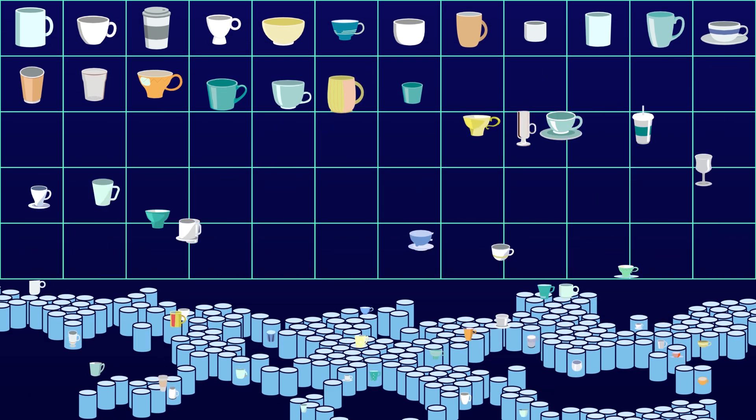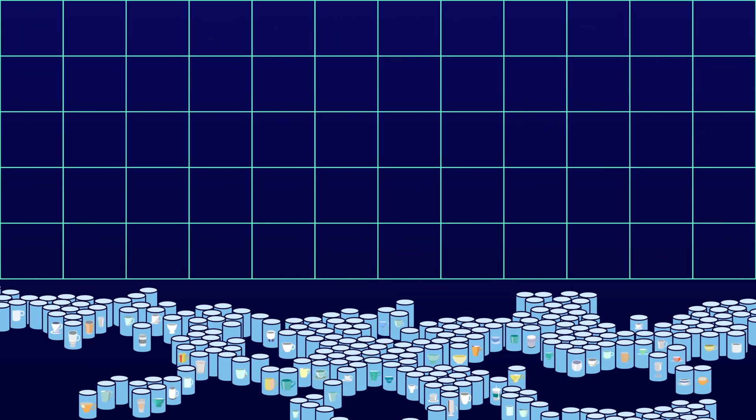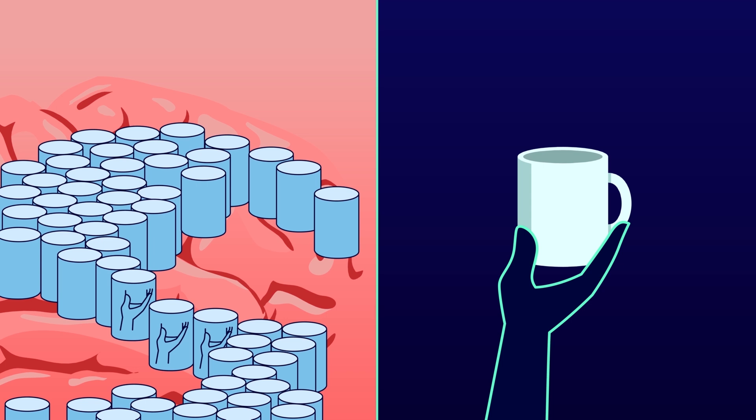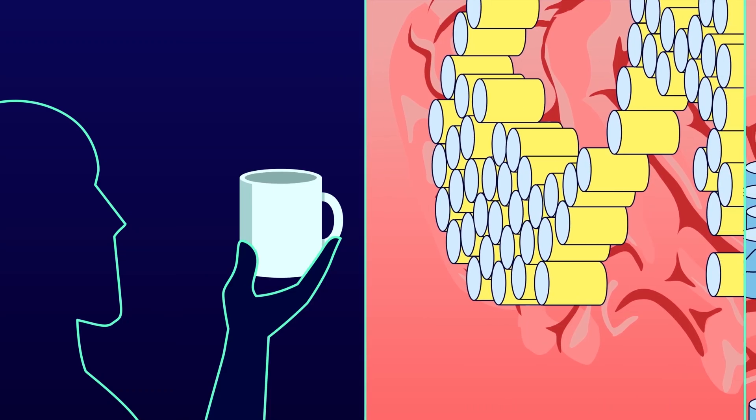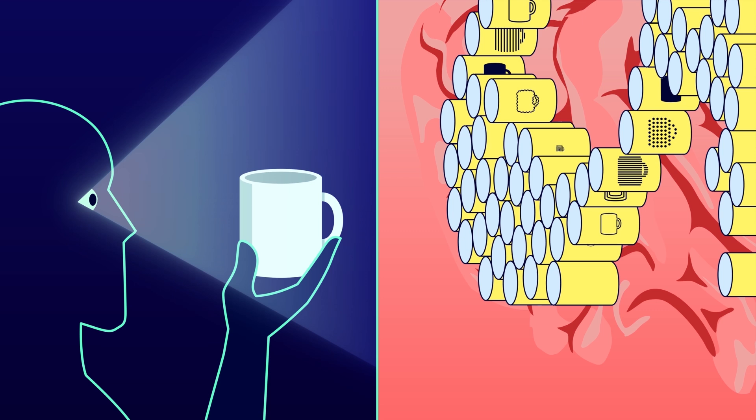Therefore, there are thousands of models of the coffee cup distributed among thousands of columns. Some columns get inputs from different parts of the skin. They model what the cup feels like. And some columns get inputs from different parts of the eyes. They model what the cup looks like.